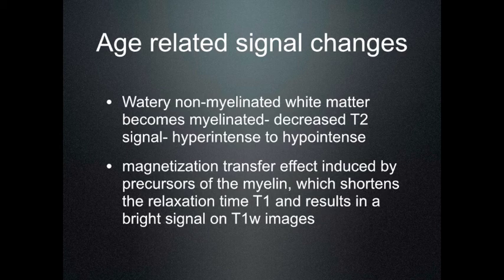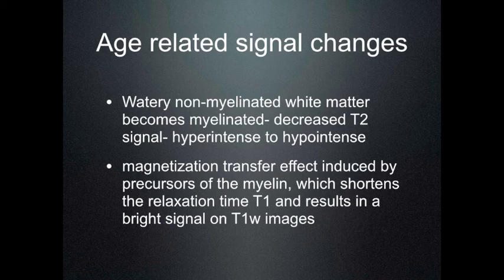It is important to look at the age-related signal changes on MRI scans. Basically, the watery non-myelinated white matter becomes myelinated and this is indicated by decrease in the T2 signal intensity as the unmyelinated white matter becomes myelinated. So therefore, the hyper-intense watery white matter becomes hypo-intense on T2-weighted images.